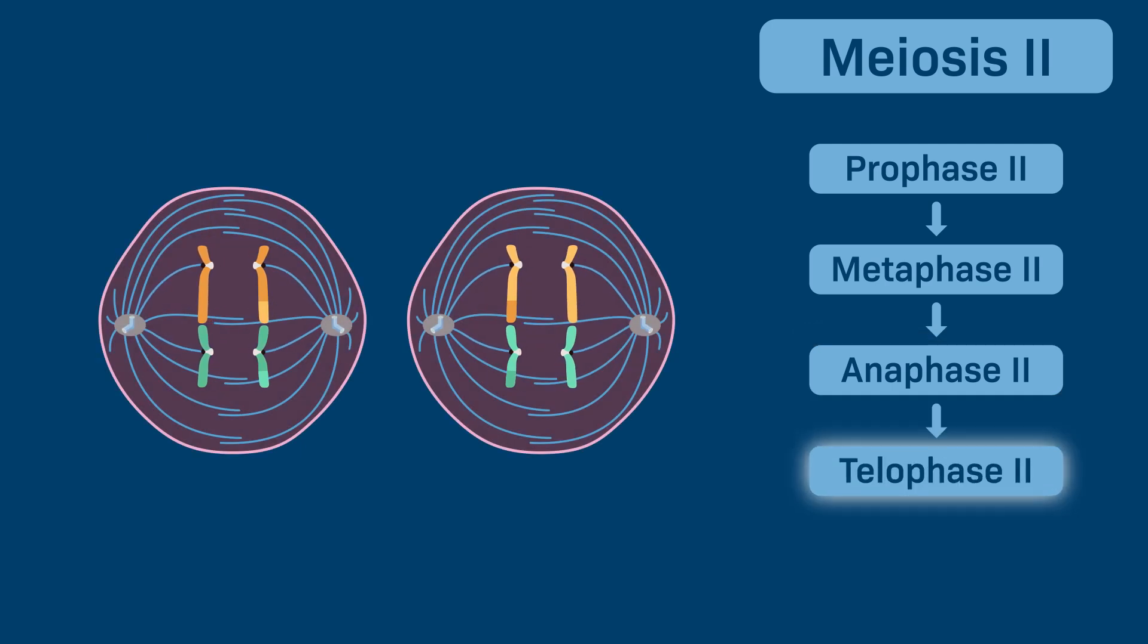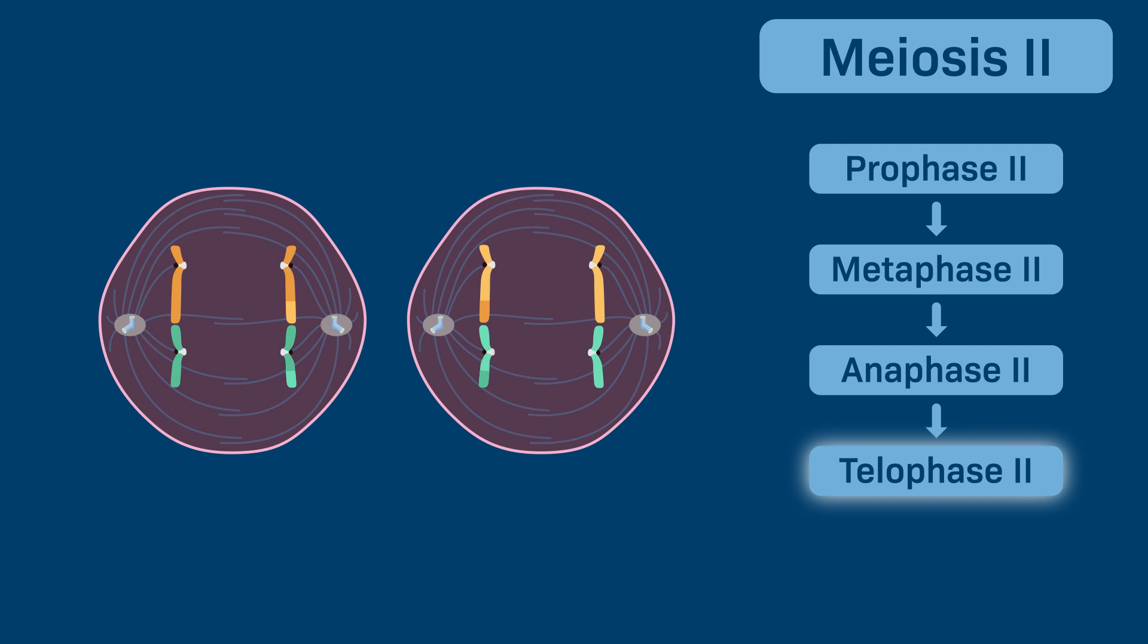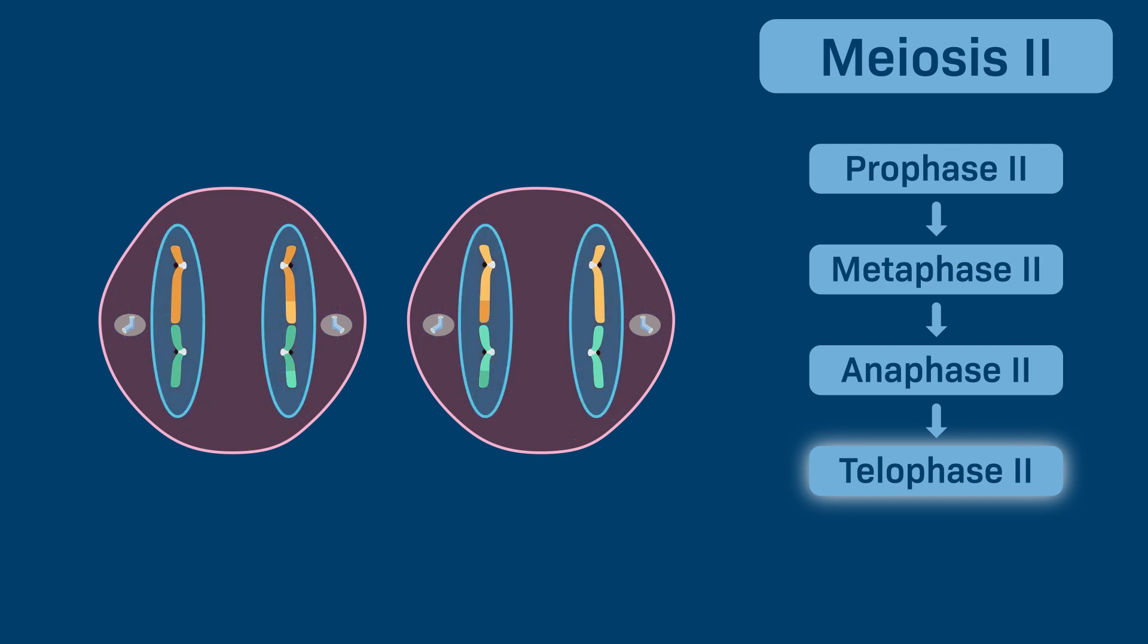During telophase II, the chromosomes arrive at the spindle poles and the meiotic spindles break down. The nuclear envelopes reform, which results in two nuclei in each cell. Lastly, the chromosomes decondense.